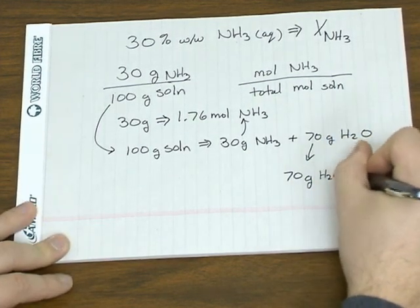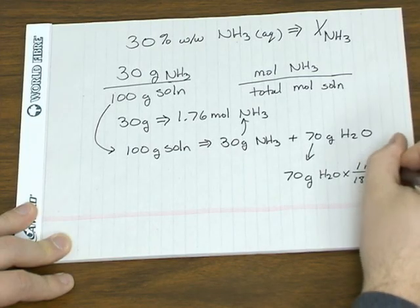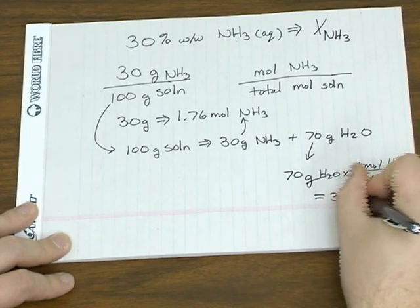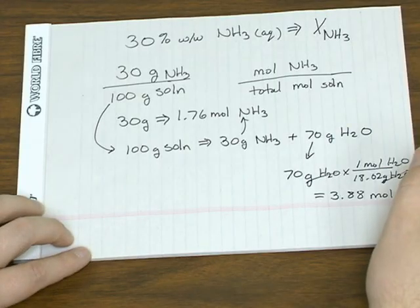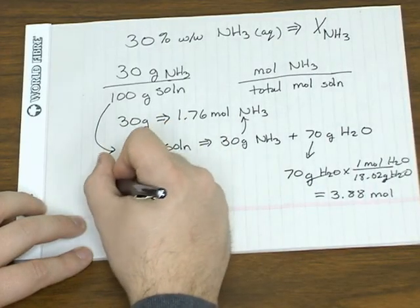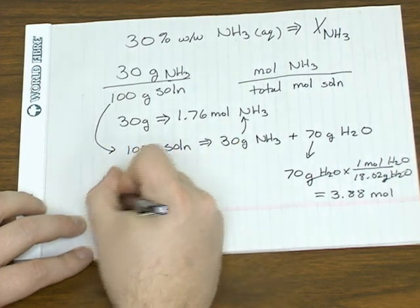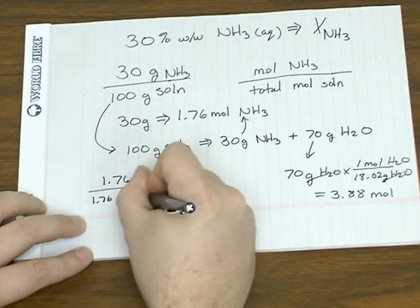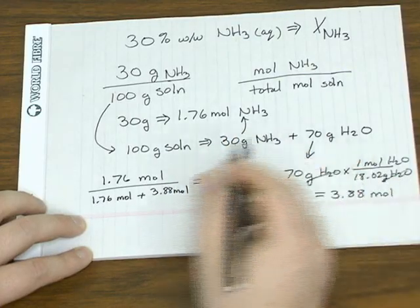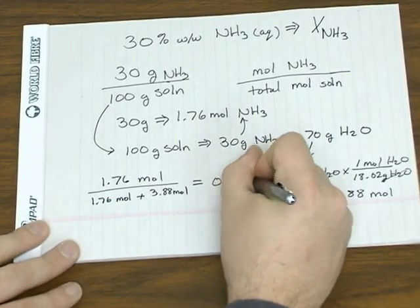And 70 grams of water, so here is 3.88 moles. So now we have the total moles of solution. It's that 1.76 moles of ammonia plus the 3.88 moles of water. So we take moles of ammonia, divide it by the total, and that gives us a mole fraction of 0.312.